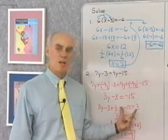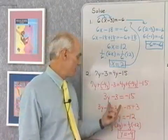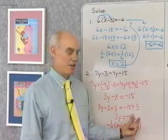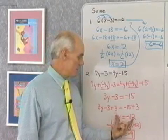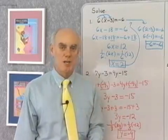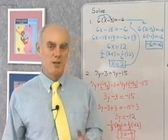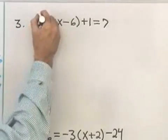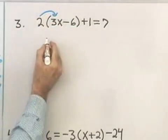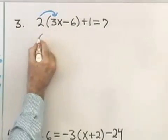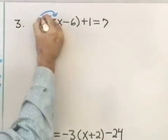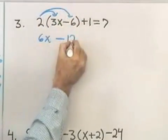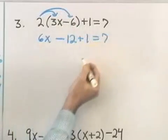It took two applications of the addition property to get all the variable terms on one side and constant terms on the other. Once that was done, it's a simple application of the multiplication property. Here's another example: 2 times (3x minus 6) plus 1 equals 7. Let's multiply using the distributive property. 2 times 3x is 6x, minus 2 times 6 is 12, plus 1 equals 7.